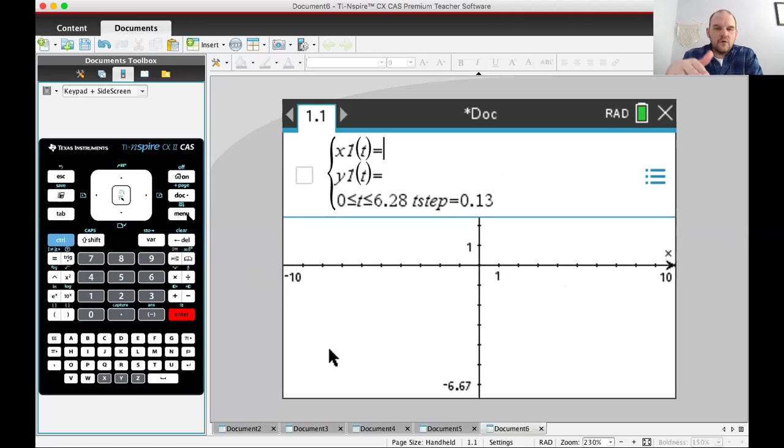Parametric. All right, so x1 of t, y1 of t. We just said that on the unit circle, we can think of x as cosine of theta and y as sine of theta. So I'm going to try x is cosine of - I have to use t as my variable. You can tell what variable to use when you're graphing because it tells you, function of t. So cosine of t, and then here sine of t.